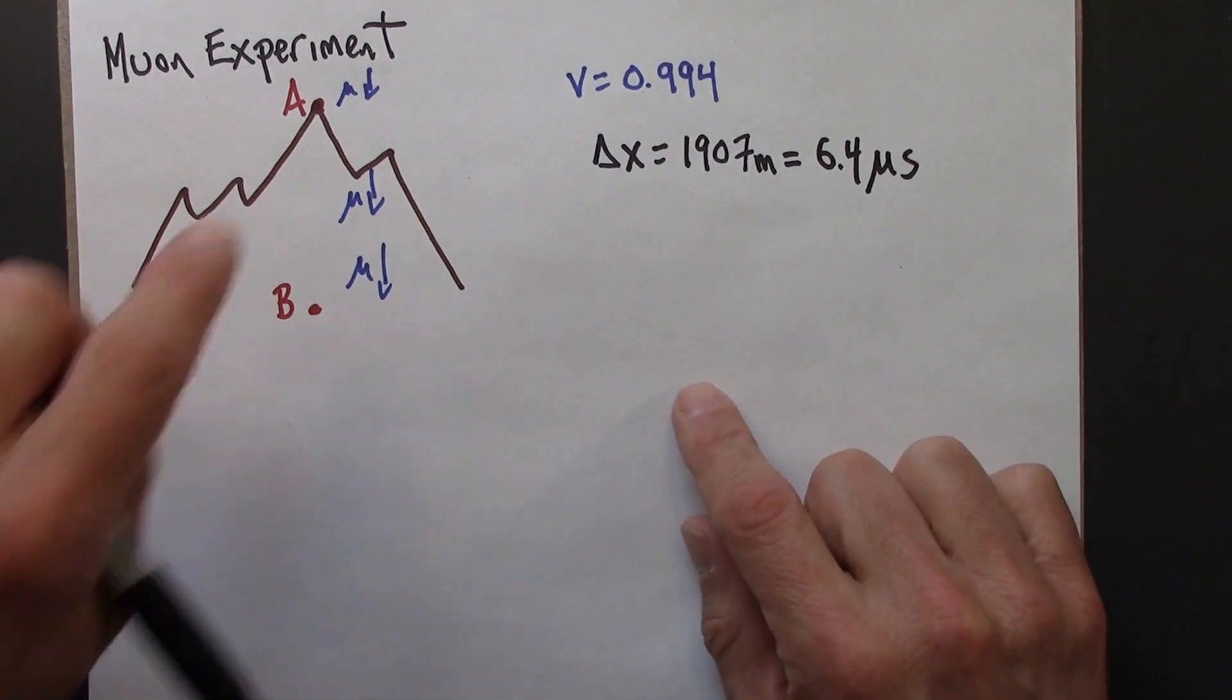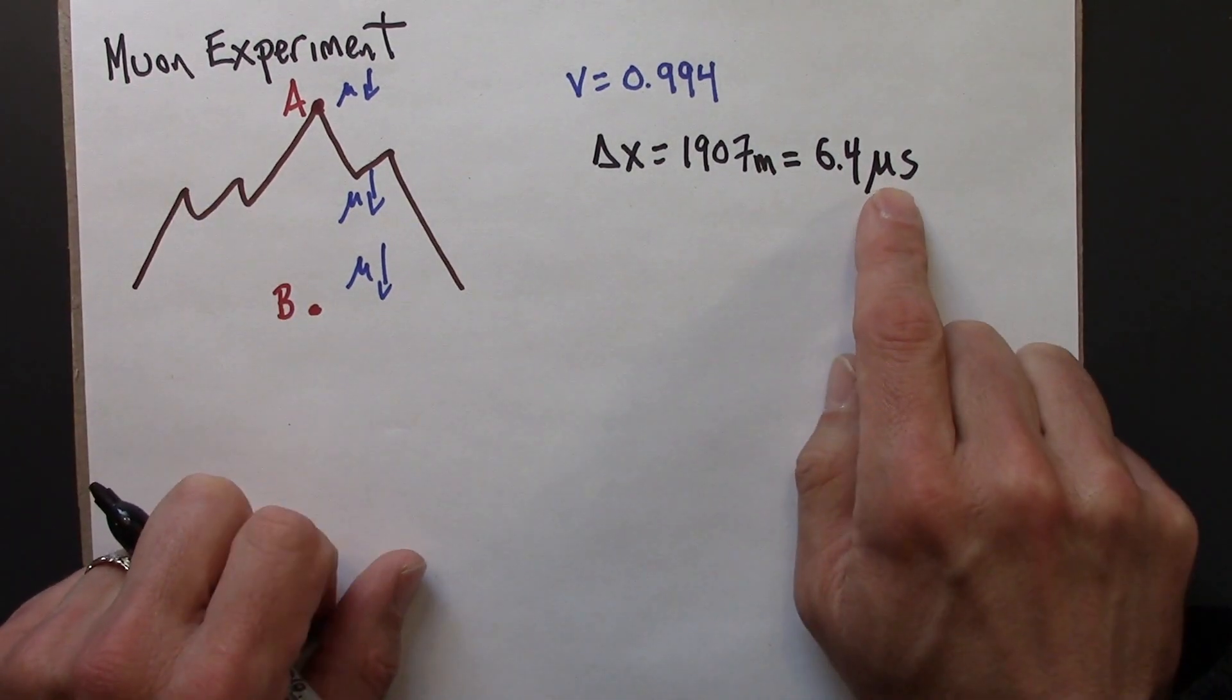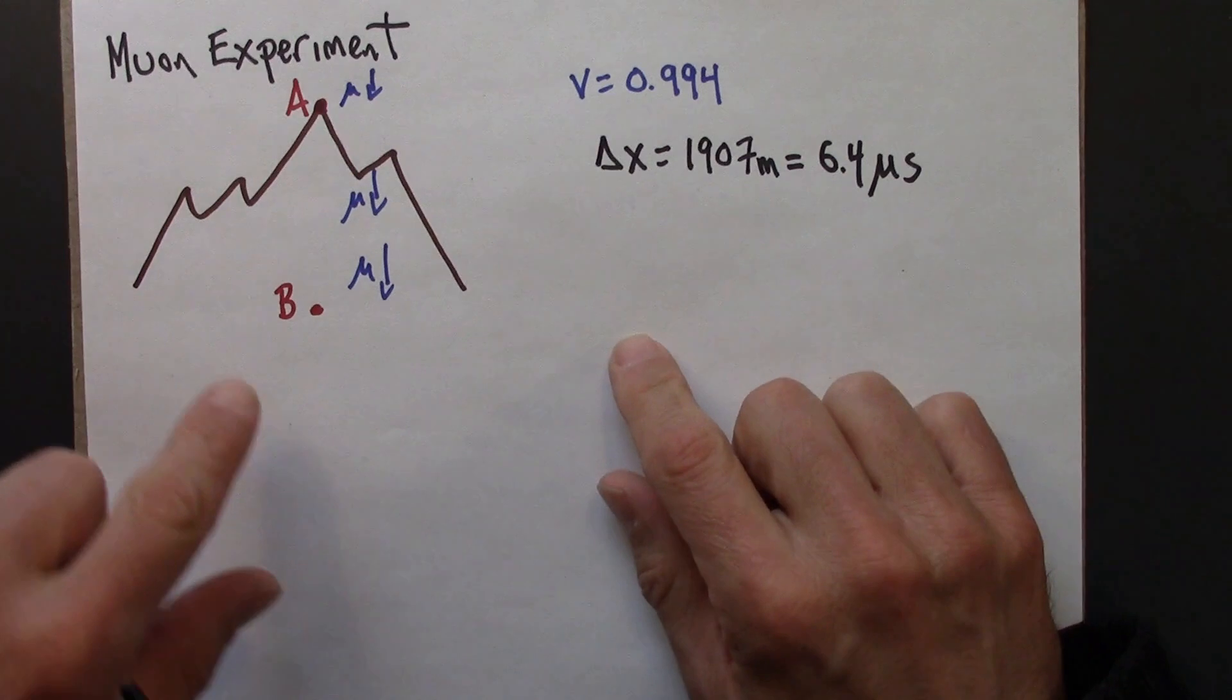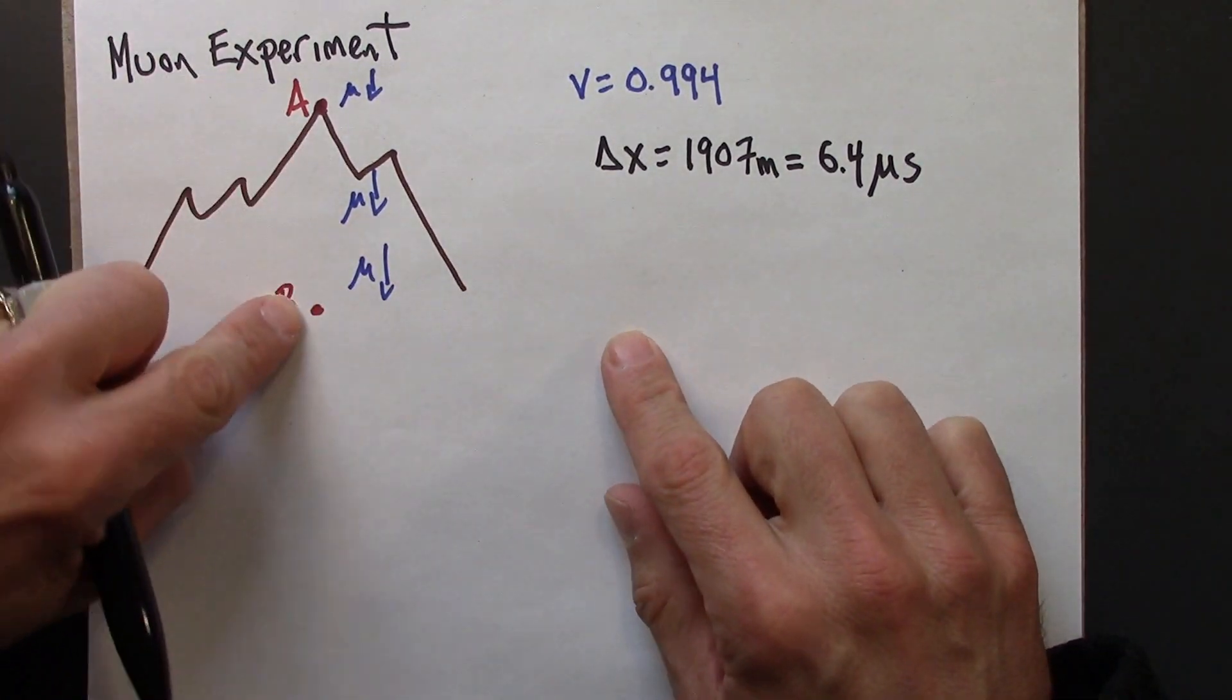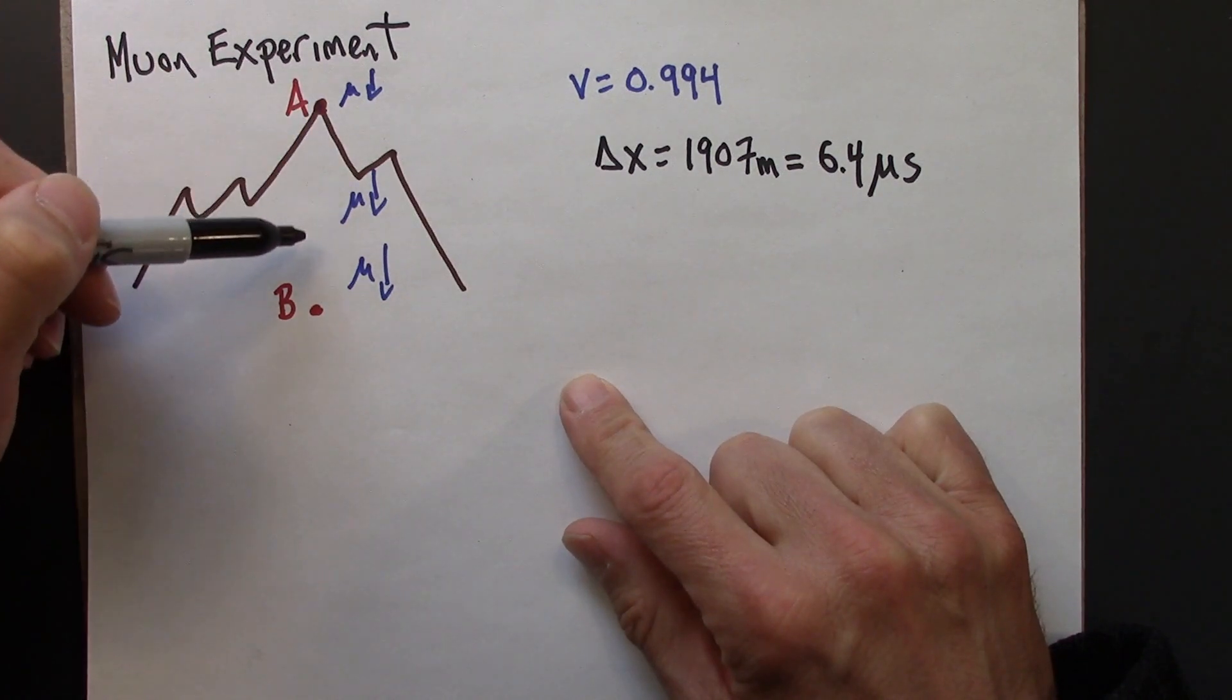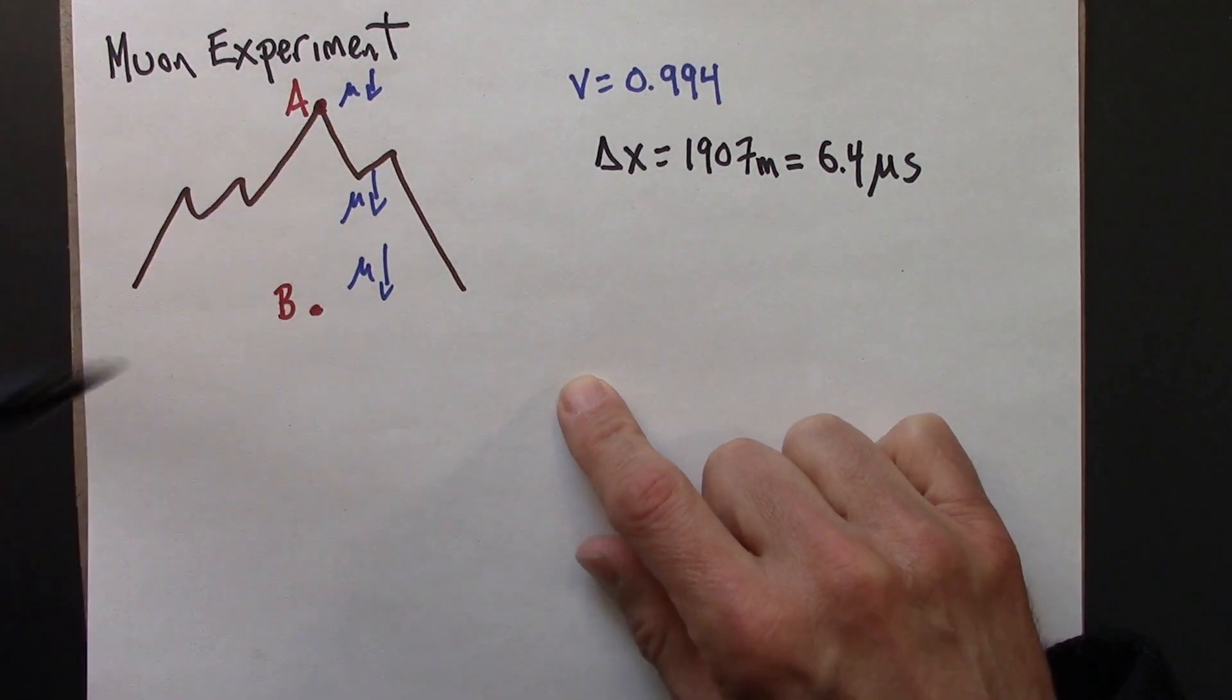It's just a coincidence that muons are drawn with mu, after the Greek letter mu, and micro also happens to be abbreviated with mu. So all sorts of mu's in this video. So the spatial separation between A and B is this. And we want to know, we're thinking about a muon that's making this journey down here. What's the time between these events?